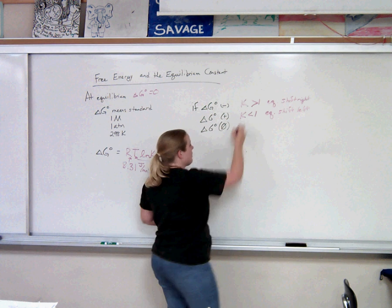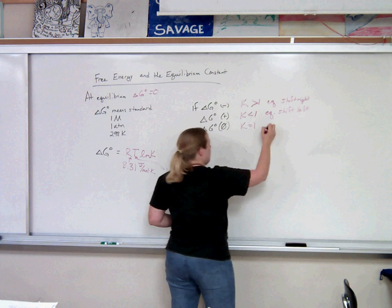Or we are favoring our reactants. And if Gibbs equals zero, then K is equal to 1, and then the reactants and products are equal.